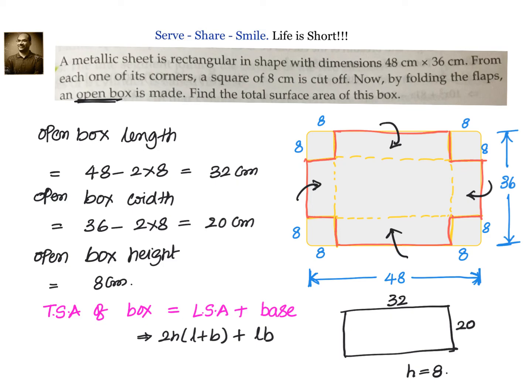Let us substitute the values and check what is our answer. 2 into 8 into L plus B that is 32 plus 20 plus L into B that is 32 into 20. Simplify that we will have 16 into 52 that will be 832 plus 640 which is equals to 1472 cm square.